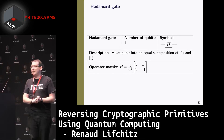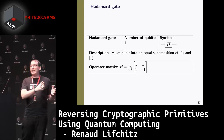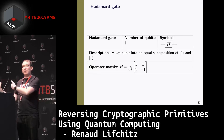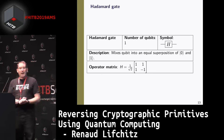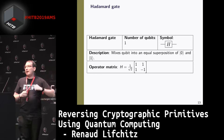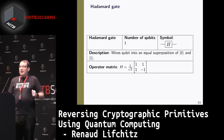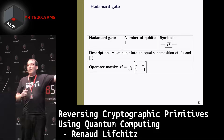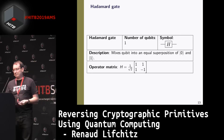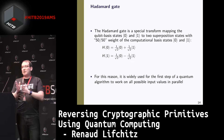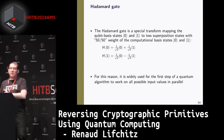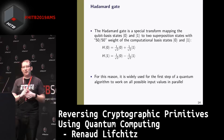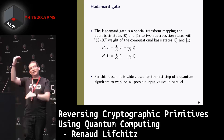Another important gate is the Hadamard gate. It transforms any fixed qubit — ket-zero or ket-one — into an equal superposition of zero and one. This gate is fundamental and will be found at every input of a quantum circuit, because it enables parallel computation over all possible input values.